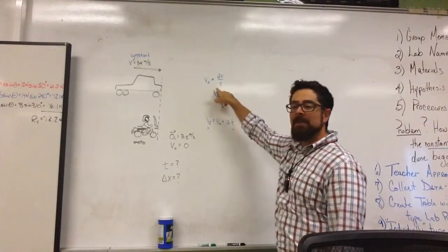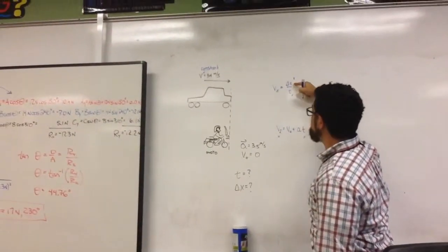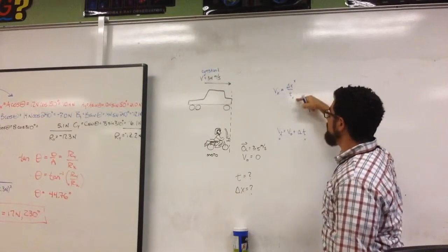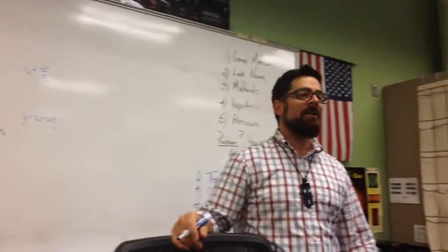How many unknowns do we have up in the equation up top? Two. We don't know the time and we don't know the displacement. How do these two unknowns compare to those two unknowns? Are they exactly the same or are they different? They are different.